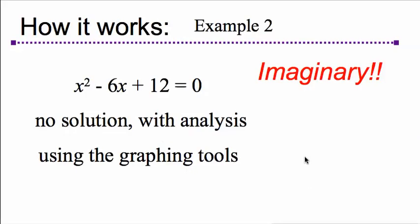Okay, now here's a second example. Alright, suppose you get a quadratic equation that looks like this. You get x² - 6x + 12 = 0. This has no solutions. We're going to analyze it using the graphing tools. This yields an imaginary answer.